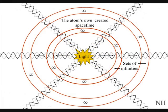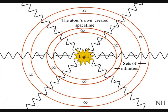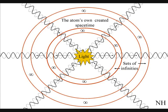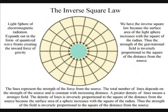Therefore, there is no instantaneous action at a distance. We have the inverse square law because the surface area of the light sphere increases with the square of the radius. Thus, the strength of the gravitational field is inversely proportional to the square of the distance from the source.